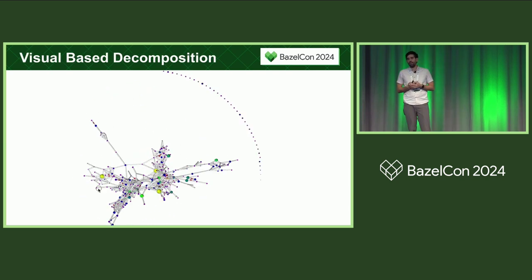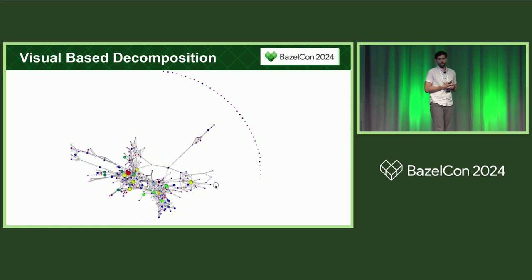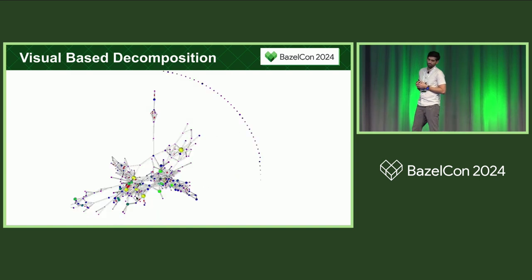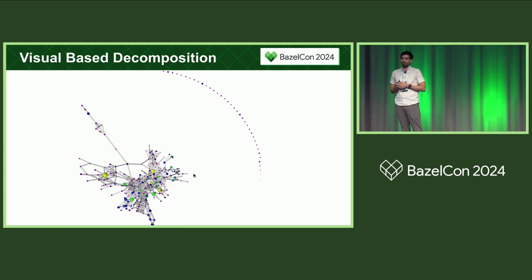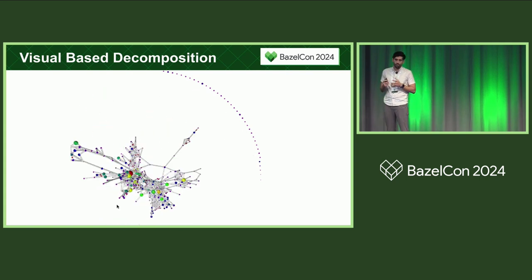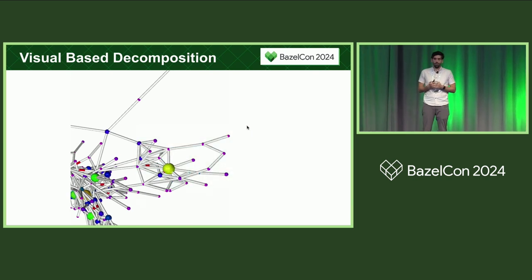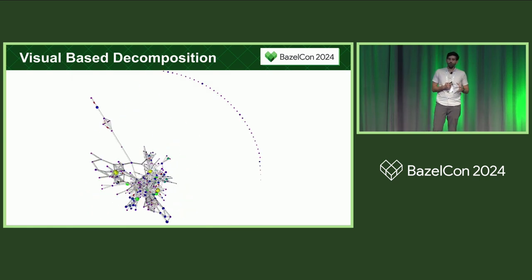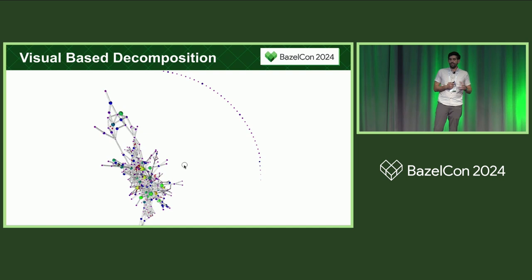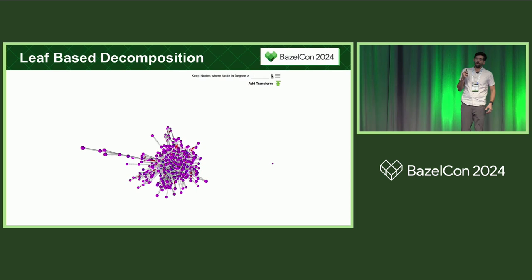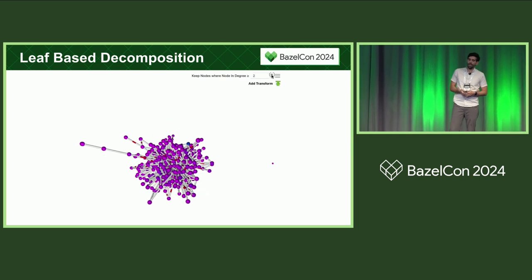Sometimes graph algorithms are not needed to identify a set of files to extract from a target, simply because your eyes can see the pattern in the target. Above is an example of one of our targets. As you can see, there's a nice and tight grouping of files inside the target. Using this visualization can be a powerful tool to motivate owning teams to accept the change, given that the file graph already denotes this as a grouping of logic. It's often more likely that there'll be no human-discernible subgraphs in the target, in which case you'll need to use graph algorithms to select which files to extract.